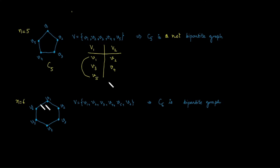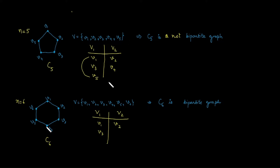For n equals 6, this is a cycle with six vertices. Let's break the vertex set into sets V1 and V2. V1 and V2 are adjacent, so different sets. V2 and V3 are adjacent, different sets. V3 and V4 are adjacent, different sets. V4 and V5 are adjacent, so V5 goes in V1. V5 and V6 are adjacent, so V6 goes in V2. V6 is adjacent to V1, and they are already in different sets. So C6 is a bipartite graph.